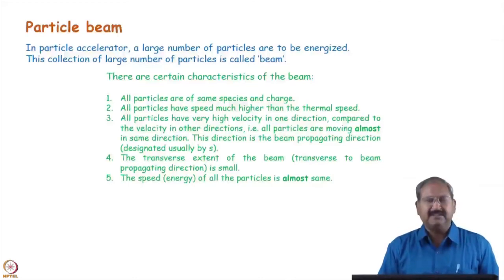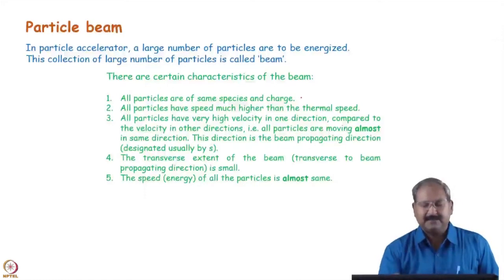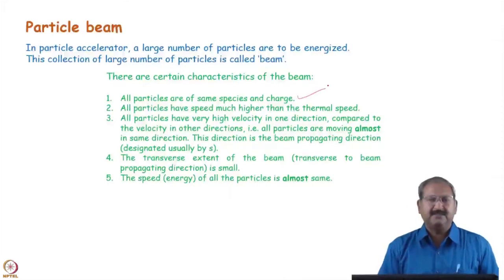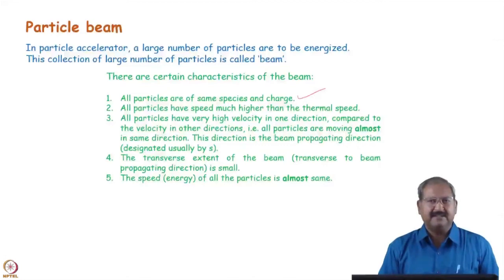First of all, the particles must be of the same species and same charge. If we are talking about an electron beam, all particles are electrons; if a proton beam, all are protons — there is no intermixing. In plasma there are ions and electrons, which is also a collection of charged particles, but that is not a beam.